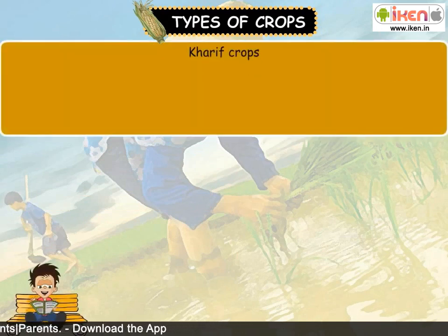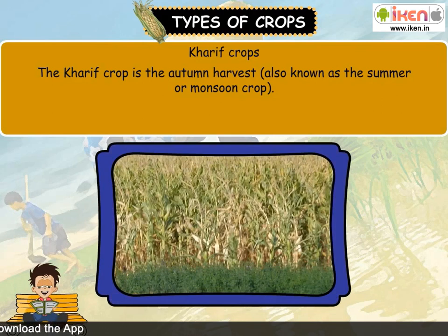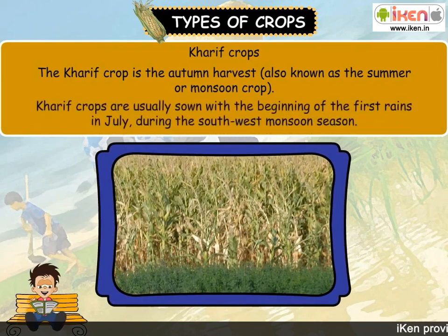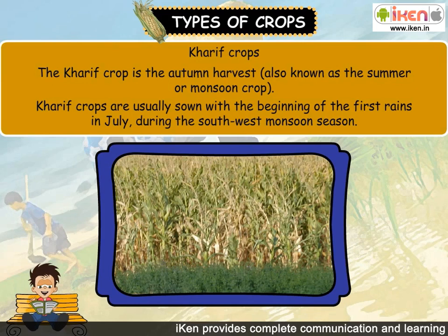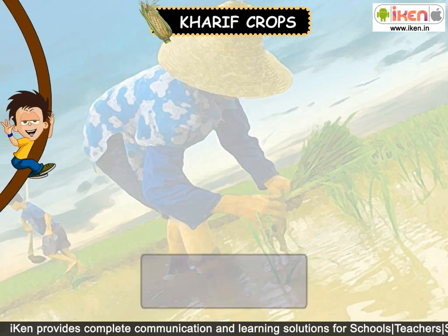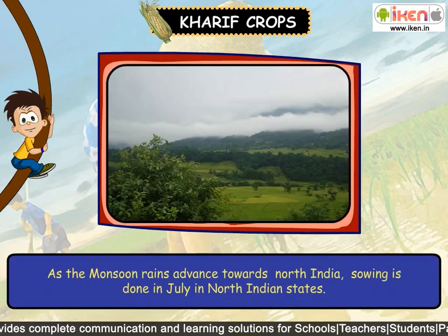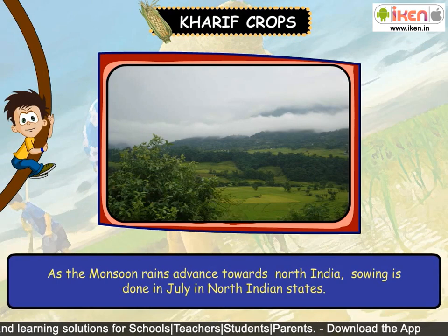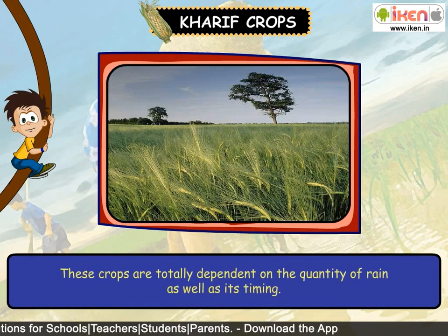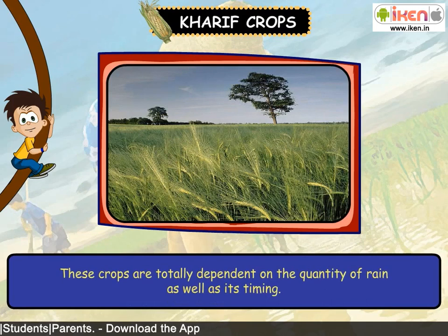Kharif crops: The Kharif crop is the autumn harvest, also known as the summer or monsoon crop. Kharif crops are usually sown with the beginning of the first rains in July during the southwest monsoon season. As the monsoon rains advance towards North India, sowing is done in July in North Indian states.